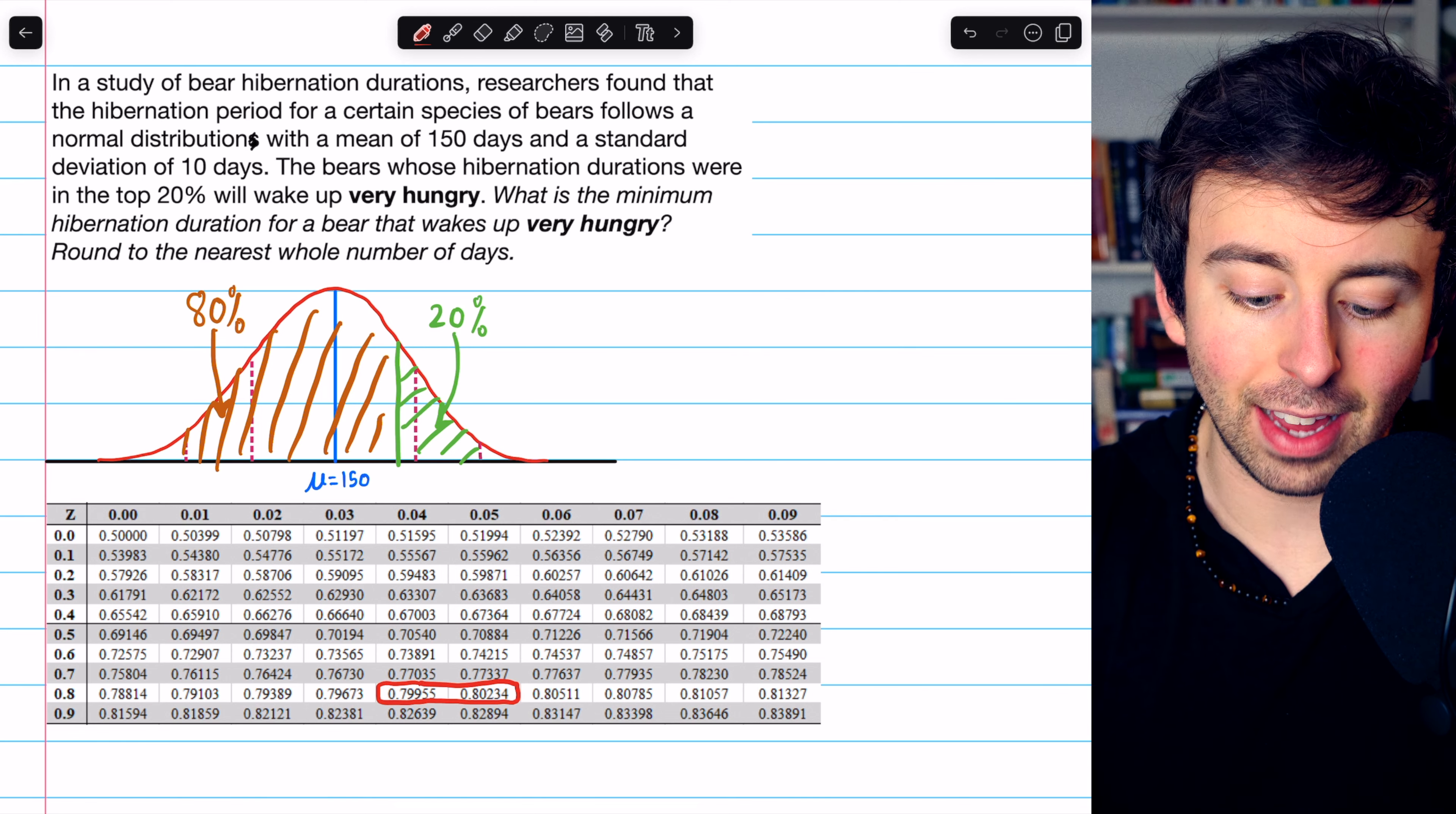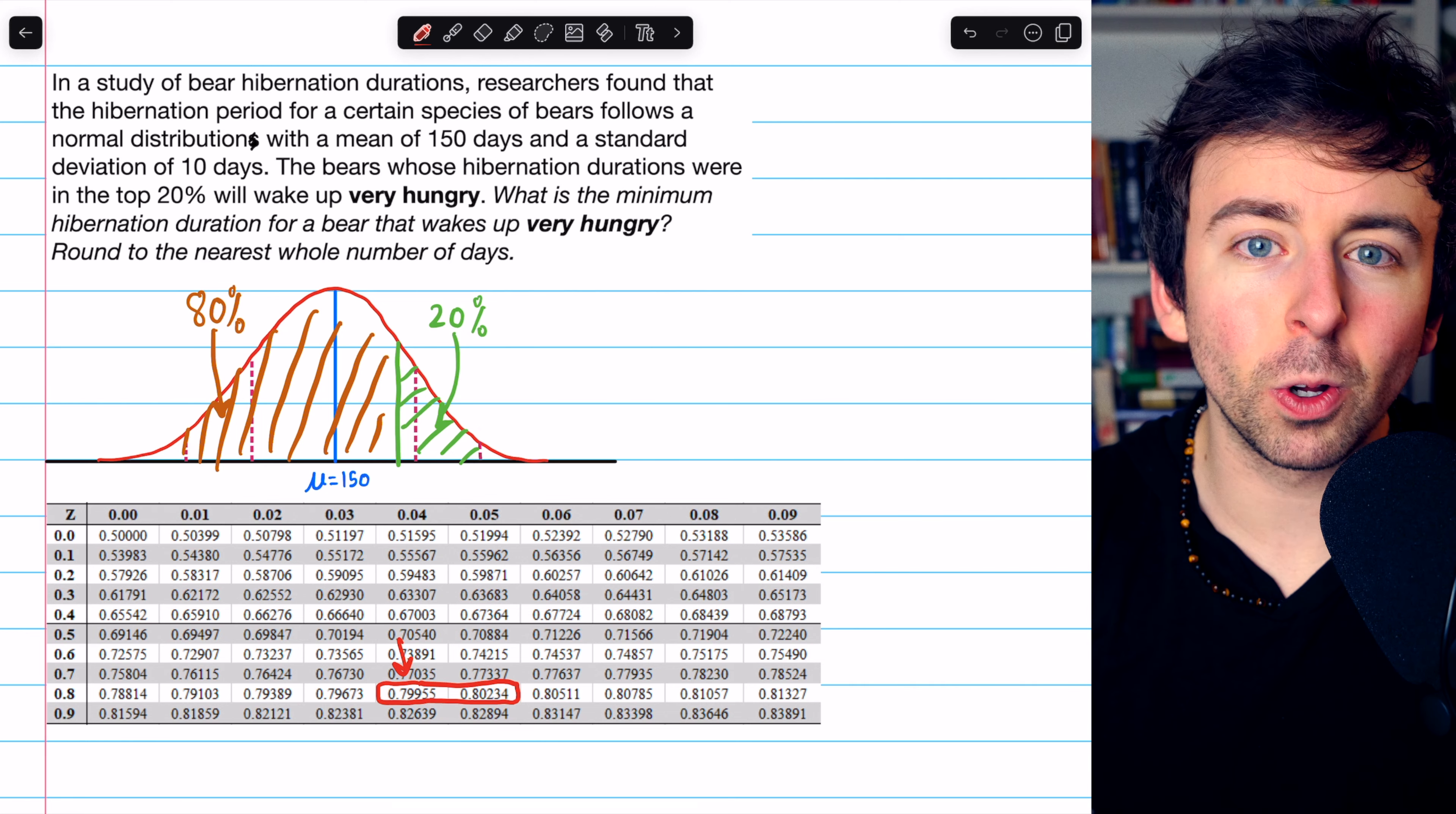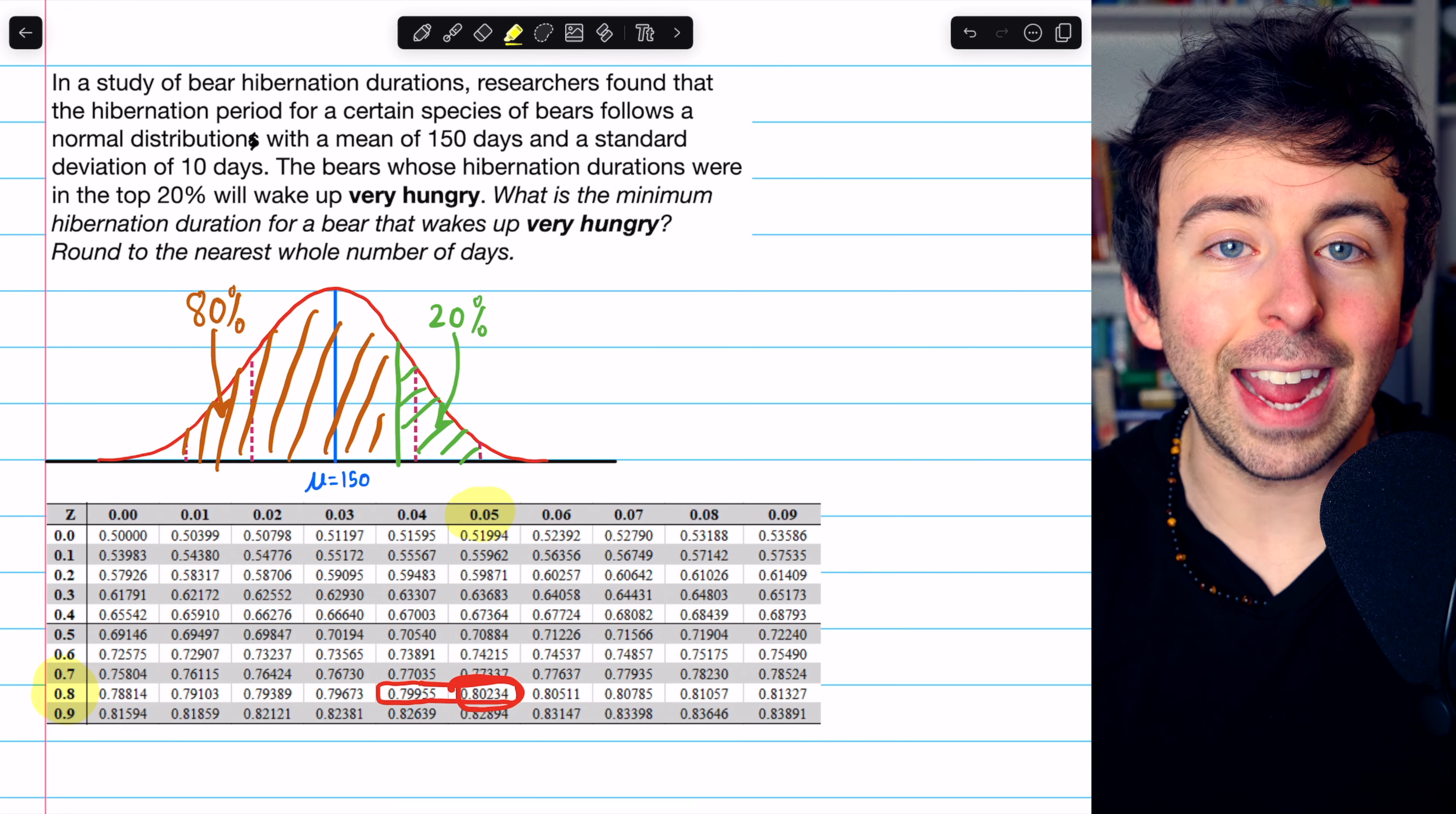That means the left tail has 80%. This one on the left is technically closer, but it's not across the threshold. We want to make sure we're across that threshold and into the top 20%, so we'll go with this one here, which has a corresponding z-score of 0.85.